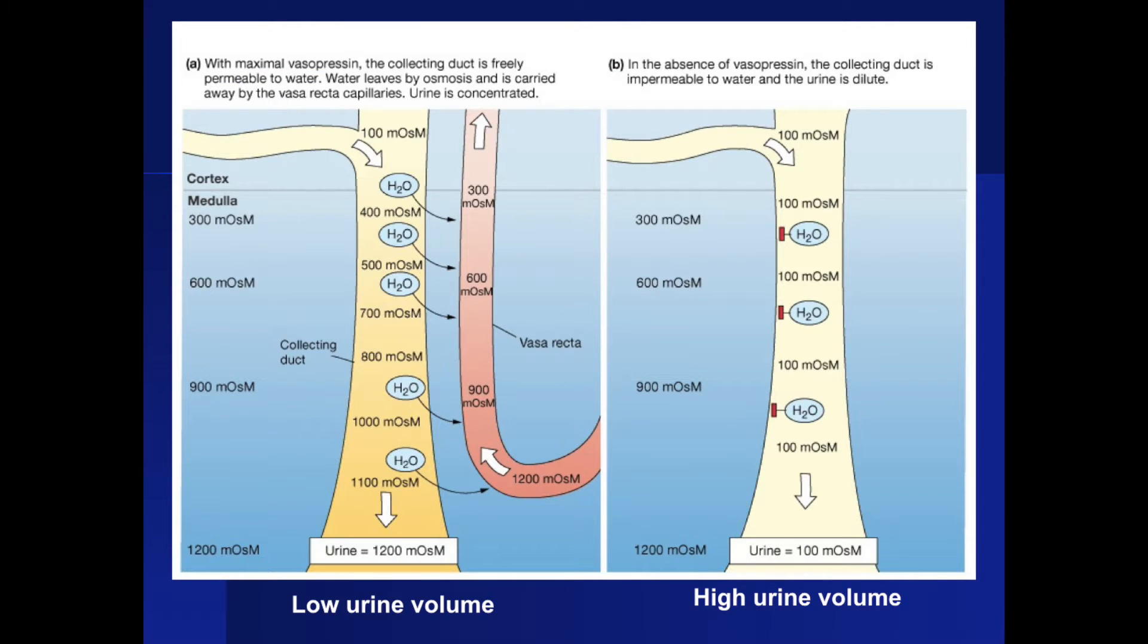Taking a closer look at the collecting duct, we see that the permeability of the collecting duct depends on the volume of urine present. When there is a low urine volume, there is a high level of vasopressin. Remember that vasopressin is also called antidiuretic hormone and is responsible for increasing water permeability in the kidney. Therefore, water can flow freely out of the collecting duct back into the bloodstream and the urine becomes very concentrated. When there is a large urine volume, vasopressin is not released and the water stays in the collecting duct to be excreted from the body.